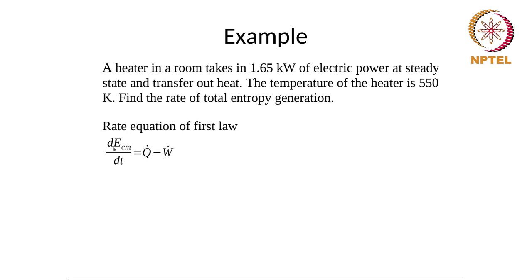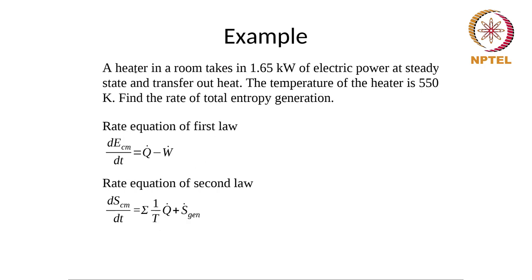Writing the rate equation of the second law: dS/dt = Σ(1/T · Q̇) + Ṡ_gen. We need to find Ṡ_gen. At steady state, dS/dt = 0, so 0 = (1/T)·Q̇ + Ṡ_gen, giving Ṡ_gen = -Q̇/T. With Q̇ = -1.65 kW and T = 550 K: Ṡ_gen = 1.65 kW / 550 K = 1650 W / 550 K = 3 W/K.